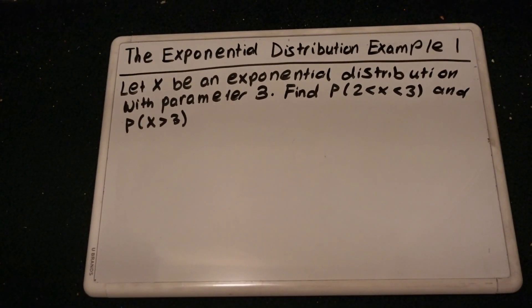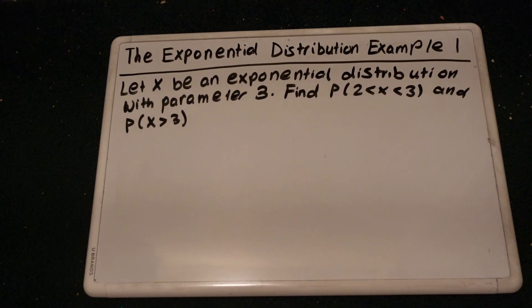Let x be an exponential distribution with parameter 3. Find the probability that x is between 2 and 3, and the probability that x is greater than 3.